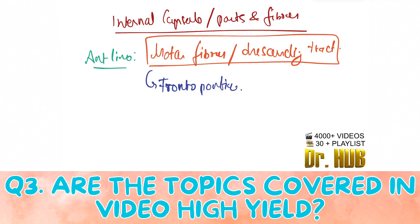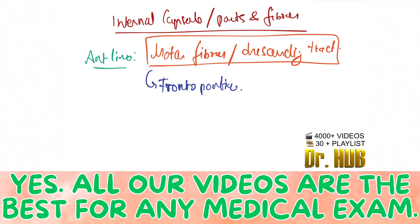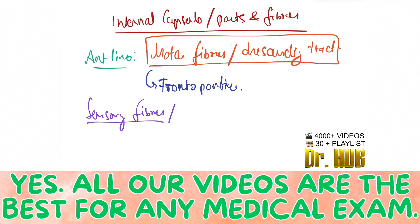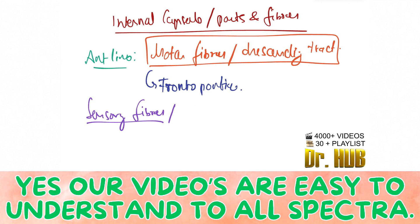Next are the sensory fibers and the ascending tracts of the anterior limb. Under the sensory fibers and ascending tracts, there is the anterior thalamic radiation.